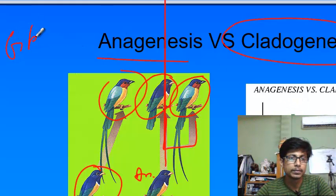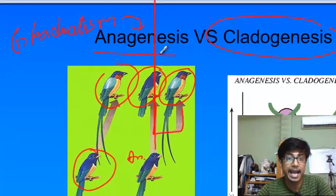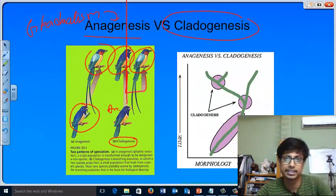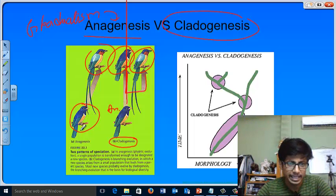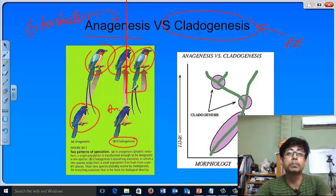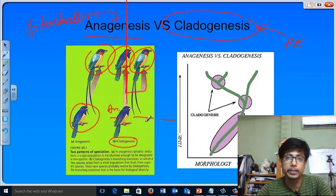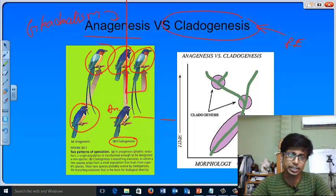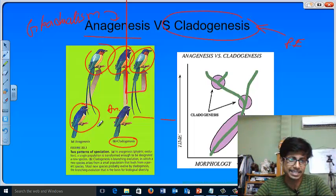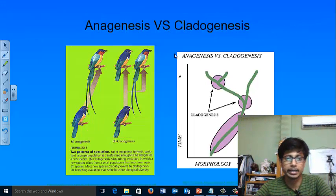Gradualism works with anagenesis theory. That means from the ancestor it produces offspring in a linear fashion. While cladogenesis is the explanation for punctuated equilibrium because in punctuated equilibrium, from an ancestor different branches will occur. And as long as the environment will be kept in that equilibrium condition, that is a constant condition, the ancestor will remain as it is. So this is the idea behind it.